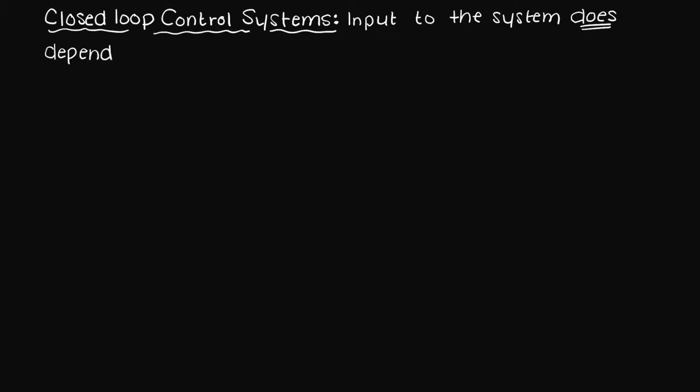Unlike in an open loop control system, in a closed loop control system the input to the system does depend on the output, but what does this mean exactly?